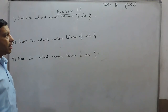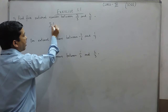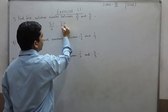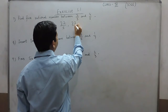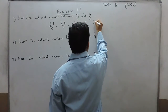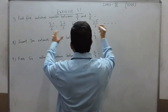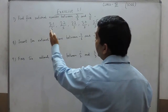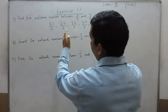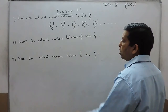We already know that the denominators are the same, so we can directly write 3.1/5, 3.2/5, 3.3/5, 3.4/5, 3.5/5 and so on. All these numbers where the numerator is more than 3 and less than 4 are rational numbers in between these two rational numbers.